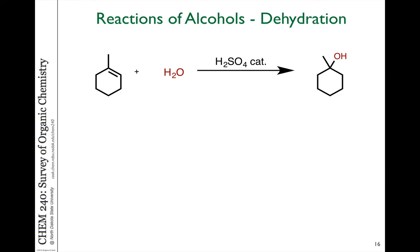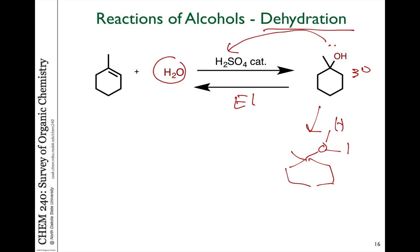We could do the hydration of alkenes to form alcohols, and the reverse of that reaction is an elimination reaction. In this case, since this is a tertiary alcohol, this acid-catalyzed elimination, or what we refer to as a dehydration because we're losing water, goes through an E1 mechanism where you protonate the alcohol, you generate the hydronium ion, and it leaves to form a carbocation.